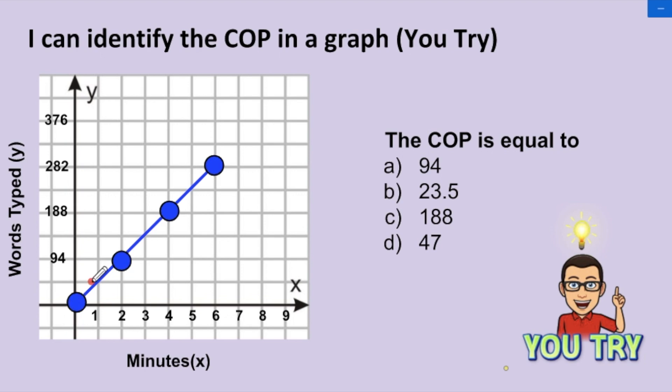So technically, we only have to choose one of those points. So I'll choose this one down here. And that point has a y of 94 and an x of 2. And 94 divided by 2 is equal to 47. So the correct answer would be D, 47.